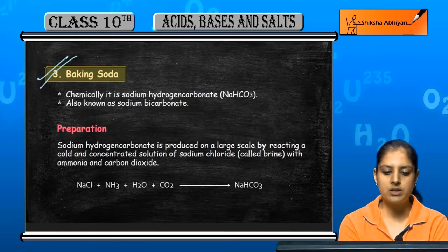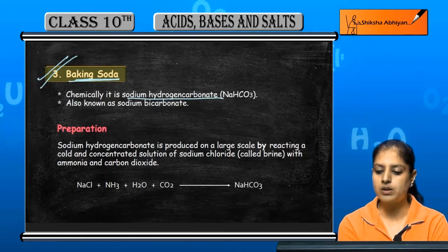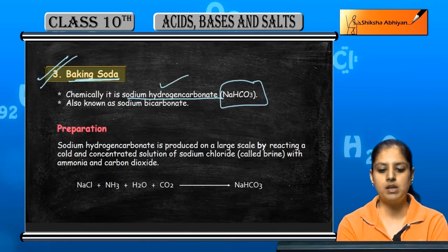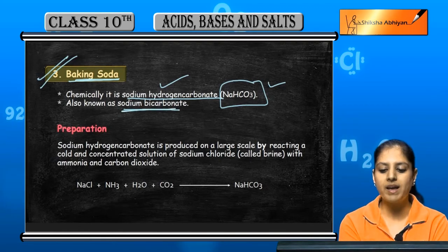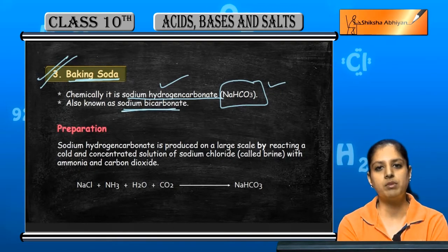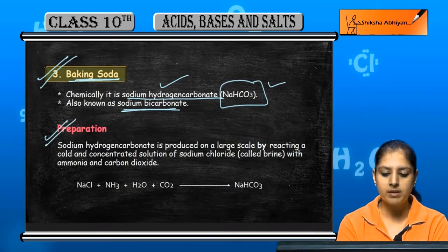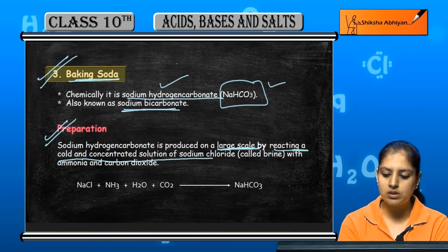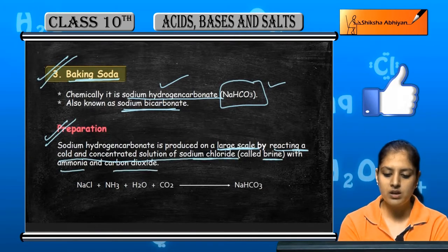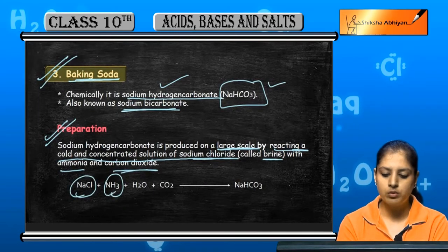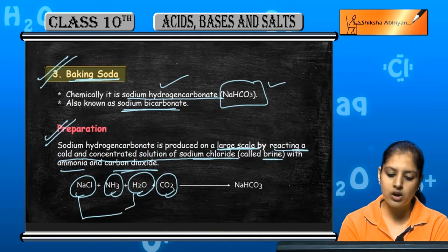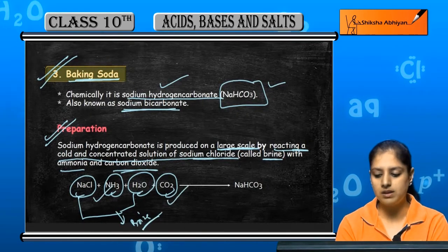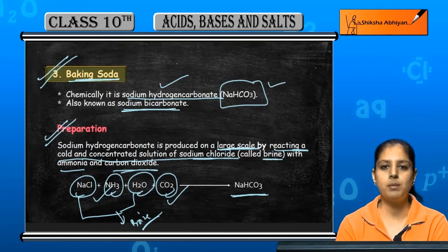Another important salt is baking soda, chemically known as sodium hydrogen carbonate, with formula NaHCO3. It is also called sodium bicarbonate. It is produced on a large scale by reacting a cold, concentrated solution of sodium chloride called brine with ammonia and carbon dioxide — NaCl, ammonia, water, and CO2 — to produce sodium bicarbonate.